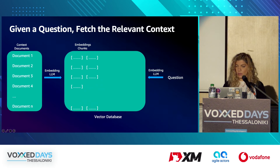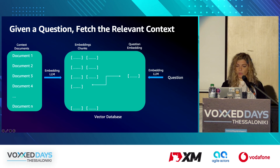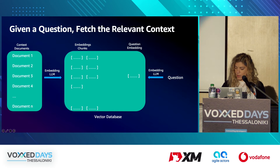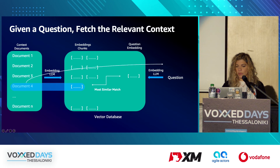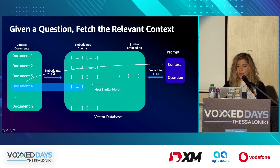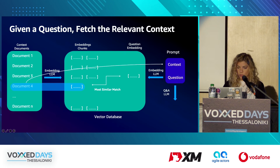When a question comes in, it is also transformed to an embedding, which is used to search the vector database for the most similar match. This retrieved information is used to augment our prompt. At this point we have not yet called the LLM — we call the LLM only when we have the augmented prompt ready. This augmented prompt is then forwarded as input to our model to get the answer.